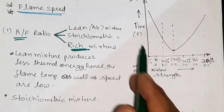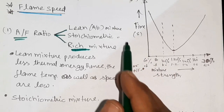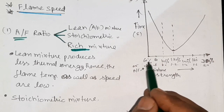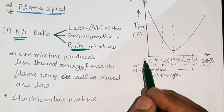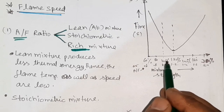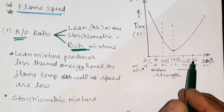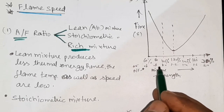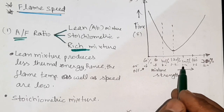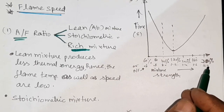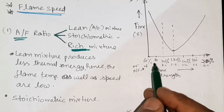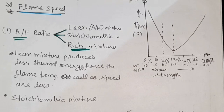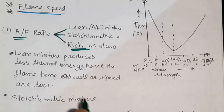In this figure you can see a graph between time in seconds and mixture strength. The air-fuel ratio is shown here, with values of 0.6, 0.8, 1.0, 1.2, 1.4, 1.6, and 2.0, also expressed as 60%, 80%, 100%, 120%, 140%, 160%, and 200% of stoichiometric. This graph represents time and mixture strength.